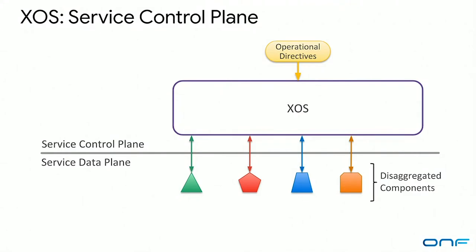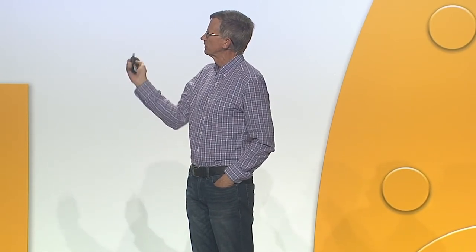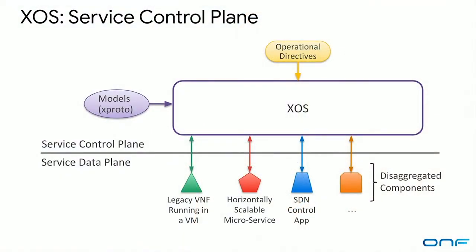The solution we've come to and are deploying in trials with major carriers partnered with the ONF — whose network operator members include Google, AT&T, Comcast, Deutsche Telekom — is a service control plane called XOS. The important thing is that it's basically managing a service data plane with a collection of different disaggregated components: some are legacy virtual network functions running in VMs, some are horizontally scalable microservices, and some are SDN control apps. In a very declarative way, you give XOS a schema that says how you want all these parts glued together in a logical space, and it makes it so on the data plane. It's a very consistent model with what happens with service meshes.